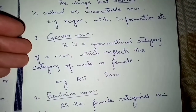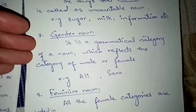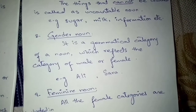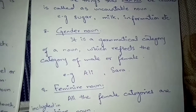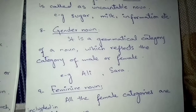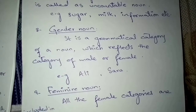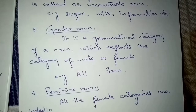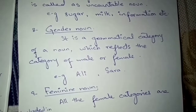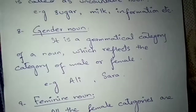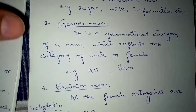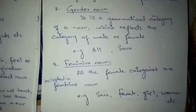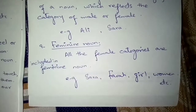The next type is gender noun. It is a grammatical category of a noun which reflects the category of male or female. For example, Ali, Raza, Sara, Fatima — these are all gender nouns, reflecting either male or female.